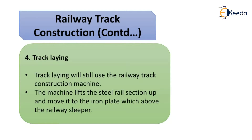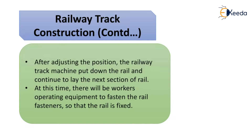Track laying: the track lane will still use the railway track construction machine. The machine lifts the steel rail section up and moves it to the iron plate which is above the railway sleeper. After adjusting the position, the railway track machine puts down the rail and continues to lay the next section. Workers operate the equipment to fasten the rail fasteners so that the rail is fixed.